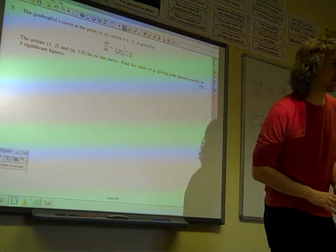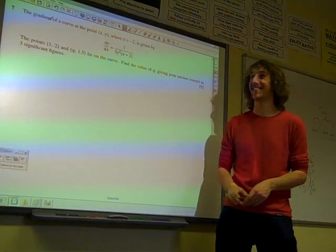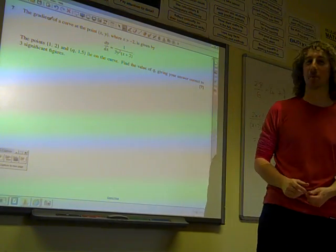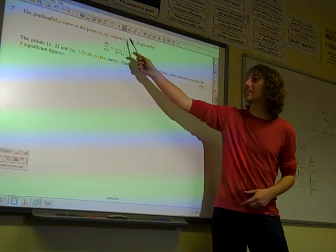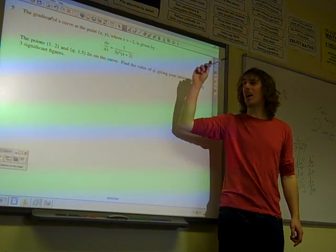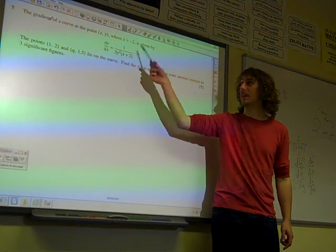So this is our summer 2011 question 7. The gradient of a curve at the point (x,y), don't take me ahead of it Jack, is where x is... oh this is interesting, x is greater than minus 2. Why are they telling us that? Let's see.